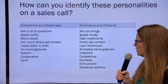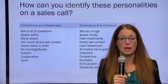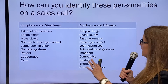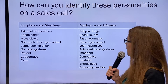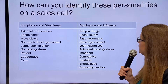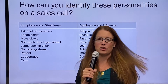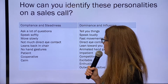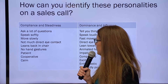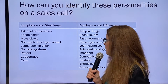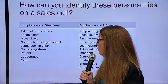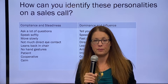How can you identify these personalities on a sales call? Here are some behaviors you might find in your clients. Compliance and steadiness are grouped together — C's and S's tend to ask a lot of questions, speak softly, move slowly, don't make a lot of direct eye contact, tend to lean back in their chair, are more laid back, don't use as many hand gestures, and are more patient, cooperative, and calm.